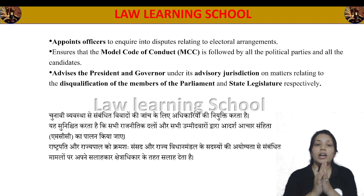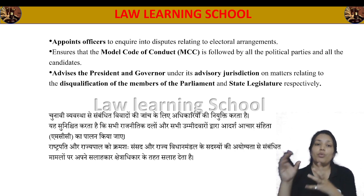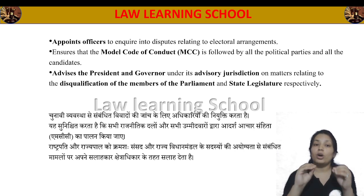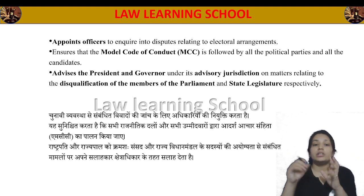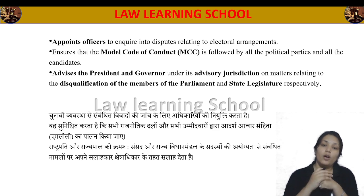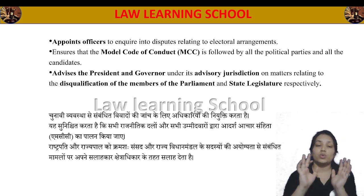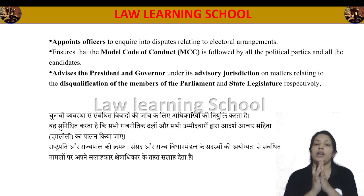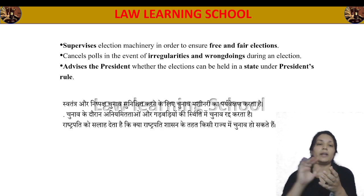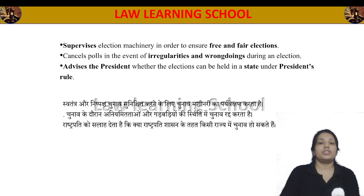The Election Commission ensures that candidates follow the Model Code of Conduct. In case the disqualification of a member of Parliament or state legislature arises, the President can be advised — this falls under advisory jurisdiction of the President and Governor. The Election Commission can also revise election machinery to ensure free and fair elections, and can cancel a poll if irregularity and wrongdoing are observed.